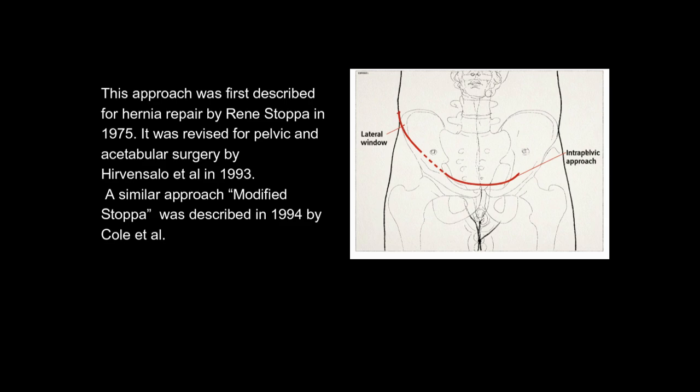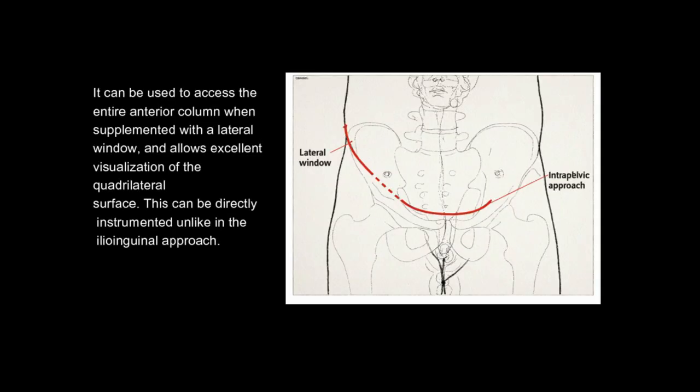A modified Stoppa approach was described in 1994 by Cole et al. It can be used to access the entire anterior column when supplemented with a lateral window, and allows excellent visualization of the quadrilateral surface. This can be directly instrumented, unlike in the ilioinguinal approach.